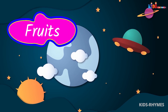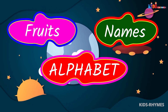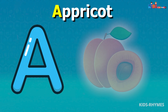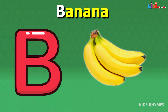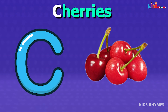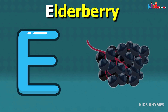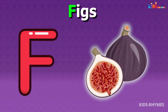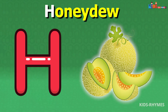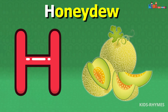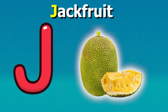Fruits name according to alphabets: A for apricots, B for bananas, C for cherries, D for dates, E for elderberries, F for figs, G for grapes, H for honeydew, I for Indian plum, J for jackfruit.